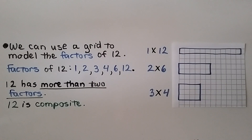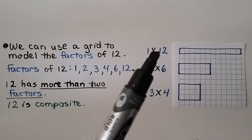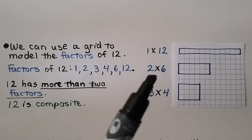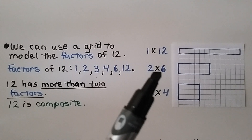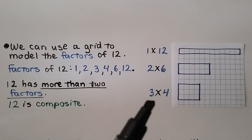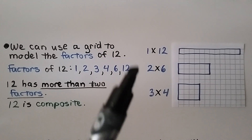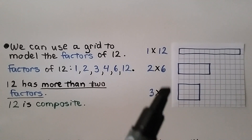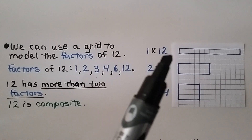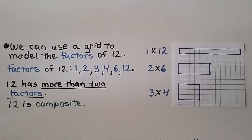We can use a grid to model the factors of 12. We have 1 row of 12 (1 times 12), 2 rows of 6 (2 times 6), and 3 rows of 4 (3 times 4). So the factors of 12 are 1, 2, 3, 4, 6, and 12. 12 has more than two factors, so 12 is composite.